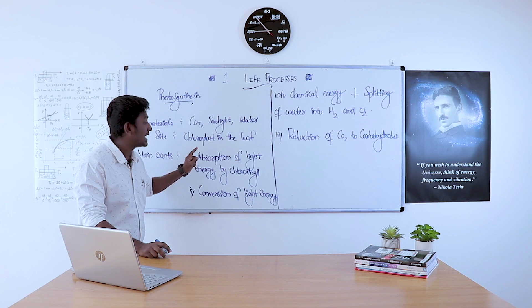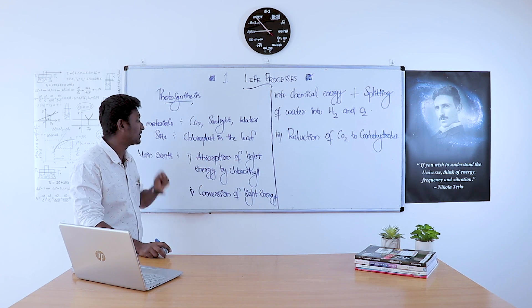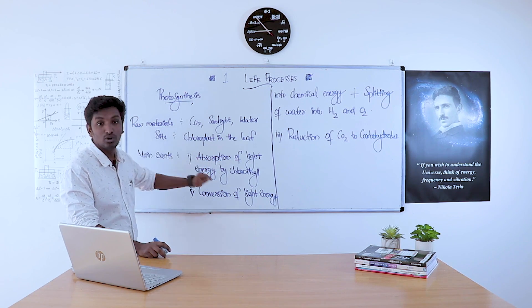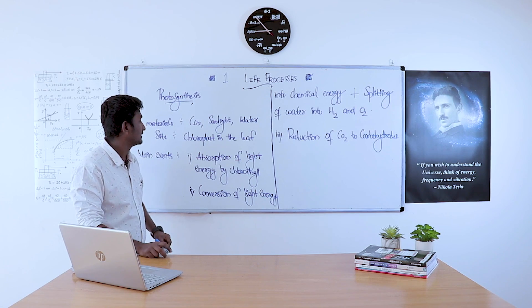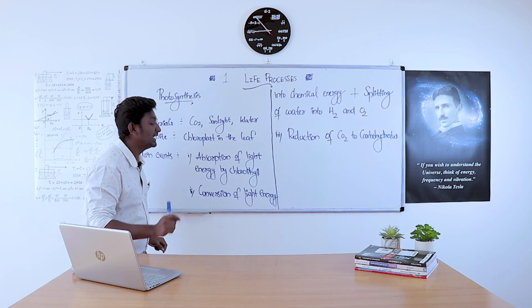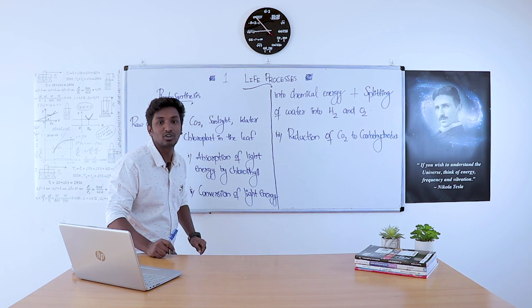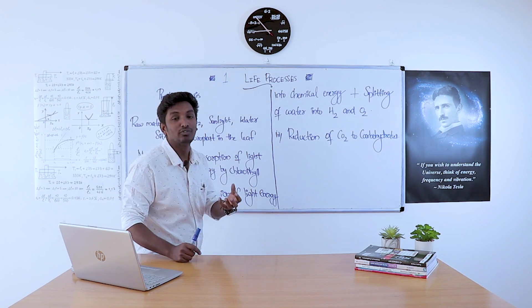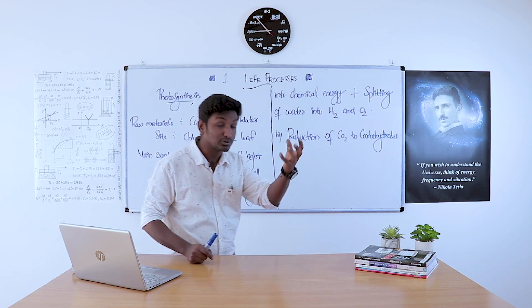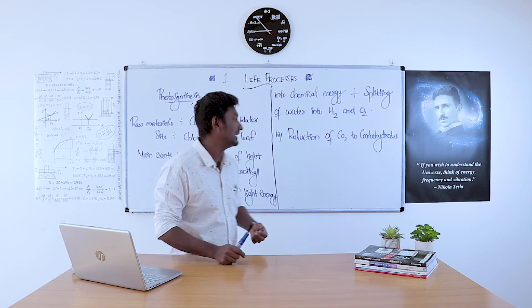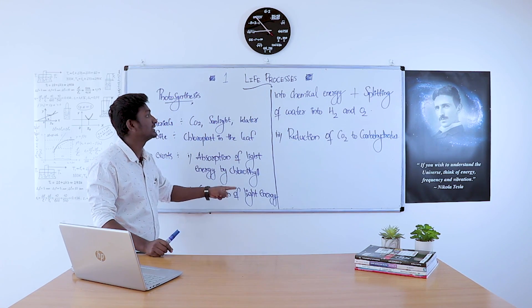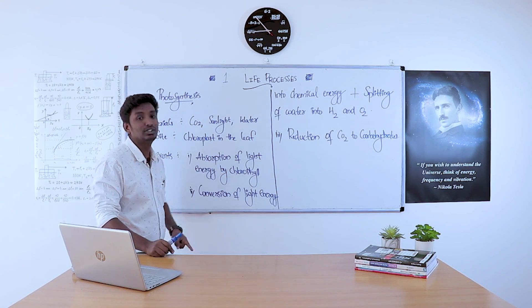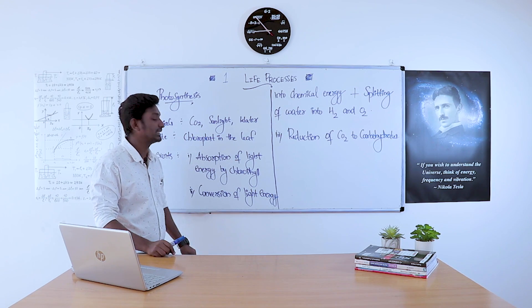The first event is absorption of light energy by chlorophyll. Chlorophyll in the leaves absorbs the sunlight.